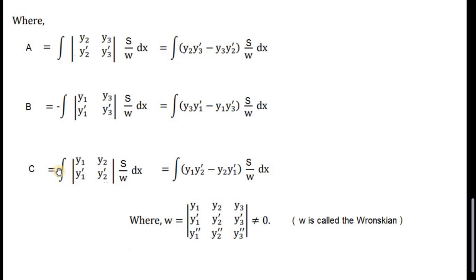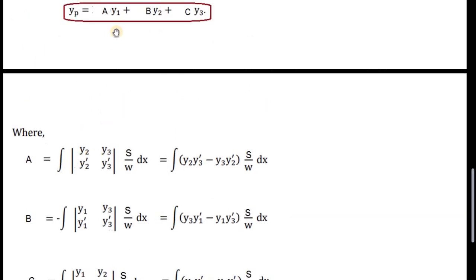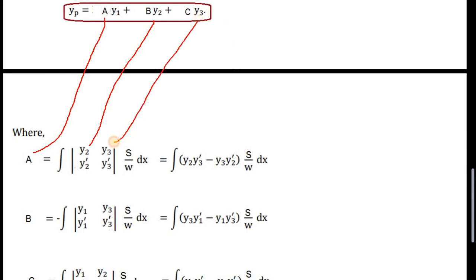To find the value of a, we use the second and third solutions. We place y2 and y3 in the determinant and ignore y1. The determinant gives the product y2*y3' minus y3*y2'. This is integrated as S over W dx, where S is the right-hand side function and W is the Wronskian of the three solutions y1, y2, y3. This formula gives the value of a.